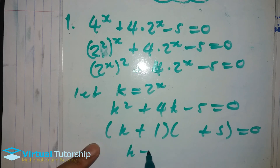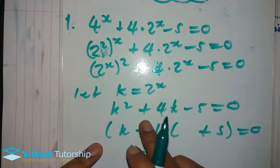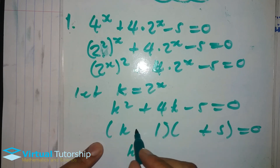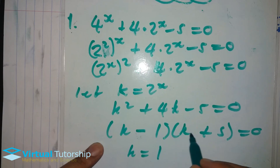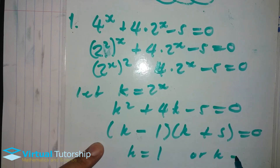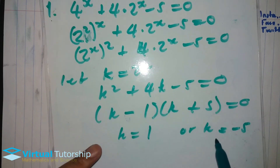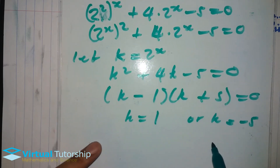So let k be equal to 2 exponent x. Then: k squared plus 4 times k minus 5 equals zero. Using the factoring method: k is equal to 1, or k is equal to negative 5.